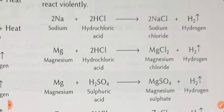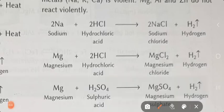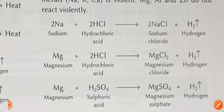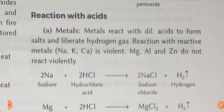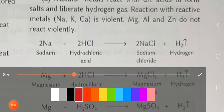See the example: when two molecules of sodium react with HCl - two molecules of hydrochloric acid - it gives two molecules of sodium chloride and hydrogen gas is evolved. So what is common in this reaction? When metal reacts with acid, it also gives hydrogen gas.